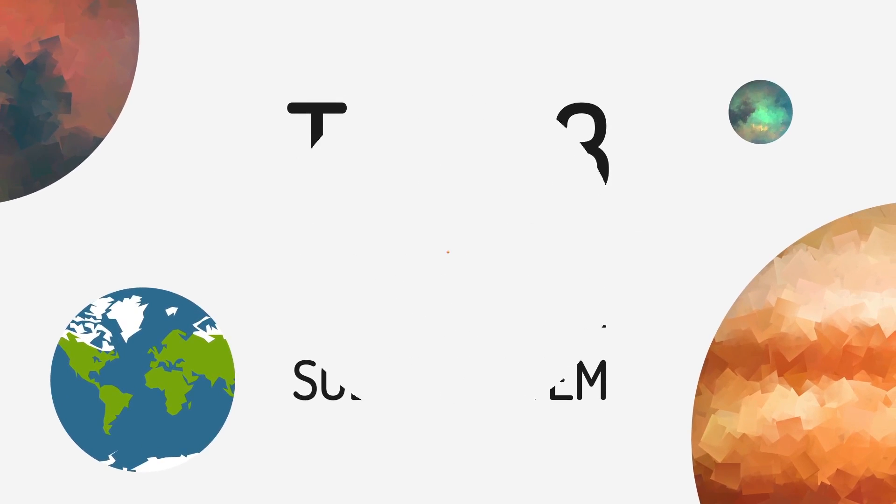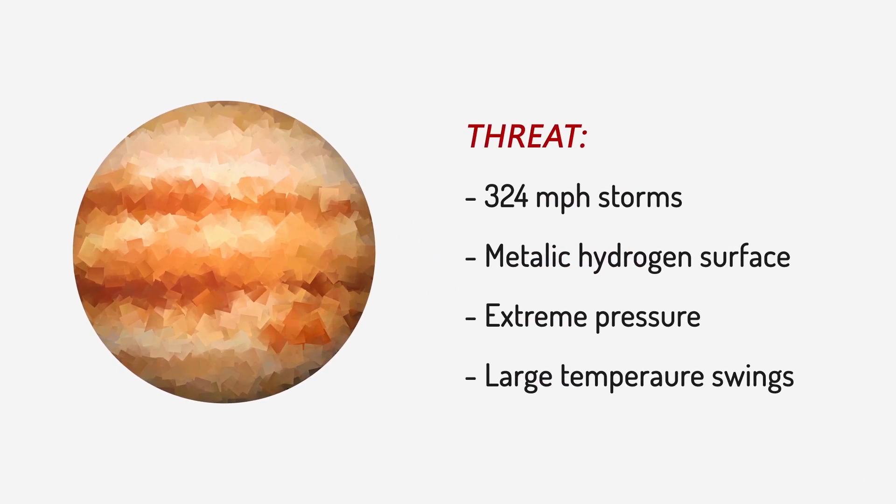Number 3 Jupiter. Beneath the clouds of Jupiter lies a sea of liquid hydrogen. The pressure gets so intense that the liquid hydrogen gets compressed into liquid metallic hydrogen.